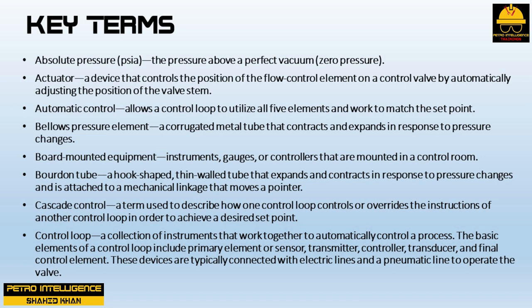Before starting the course, let us look at key terms. Absolute pressure (PSIA) is the pressure above a perfect vacuum or zero pressure. An actuator is a device that controls the position of the flow control element on a control valve by automatically adjusting the position of the valve stem. Automatic control allows a control loop to utilize all five elements and work to match the set point. A bellows pressure element is a corrugated metal tube that contracts and expands in response to pressure changes.